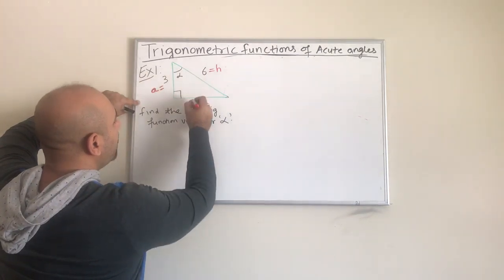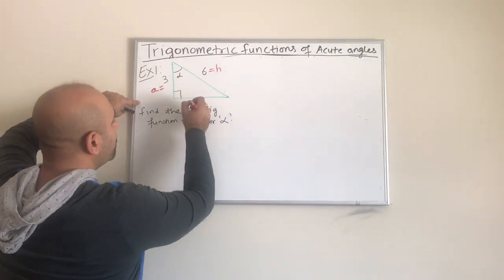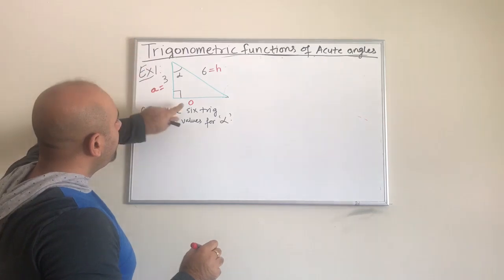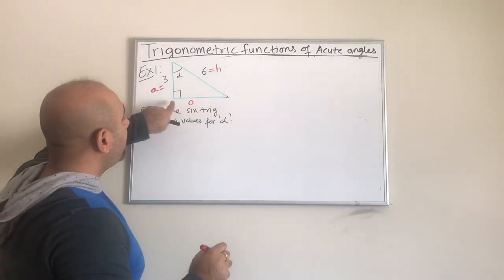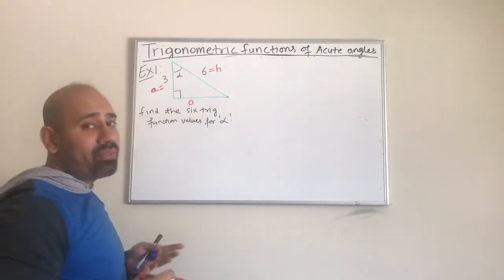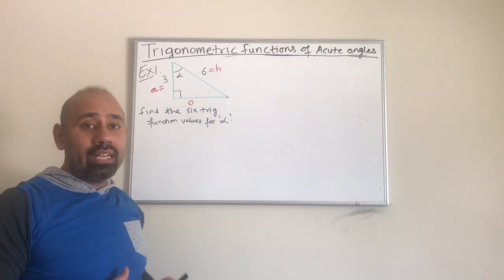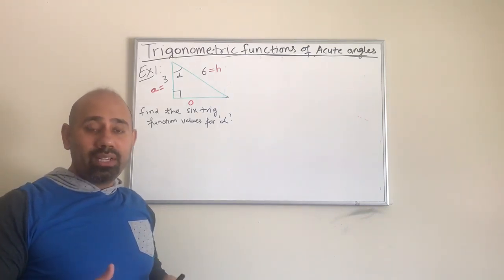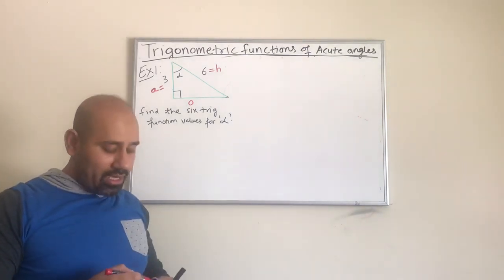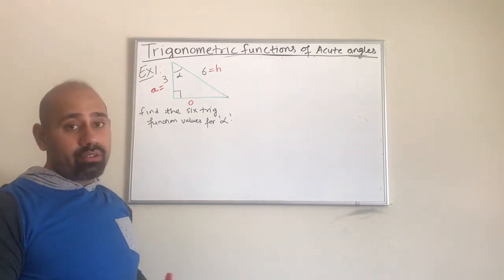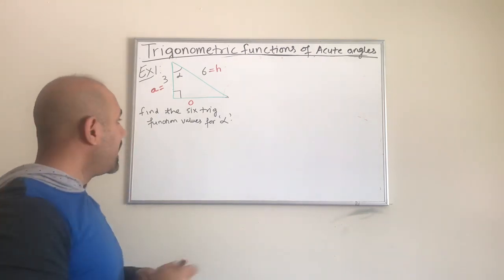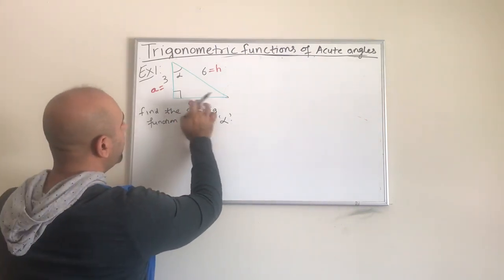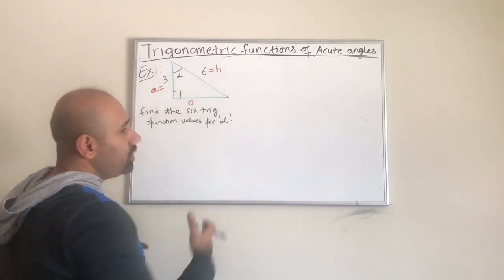This side directly opposite to the reference angle is going to be my opposite. To write the six trig functions, we need to first figure out the length of the opposite side. Once we have all three sides of the triangle, we are going to use the formulas we have learned to write the six trig ratios.